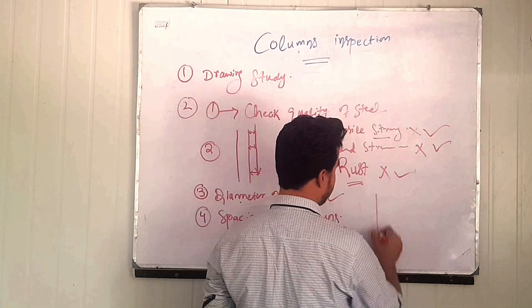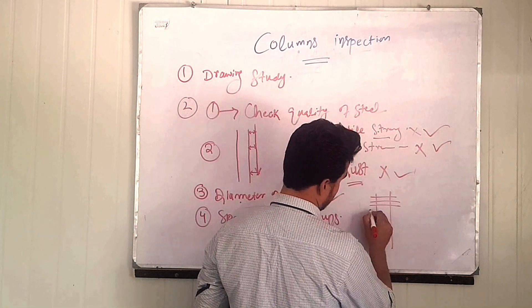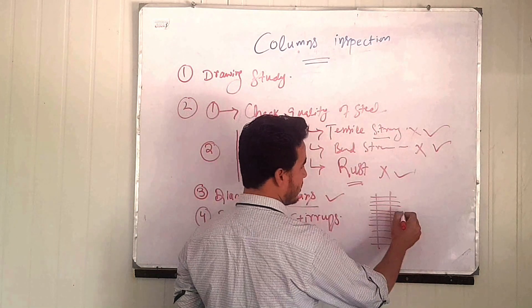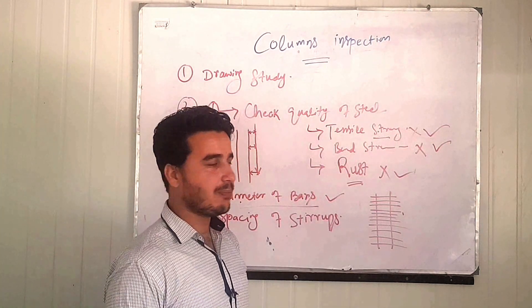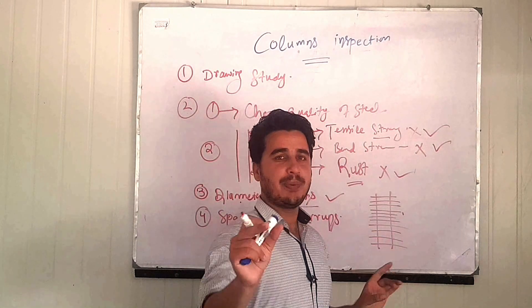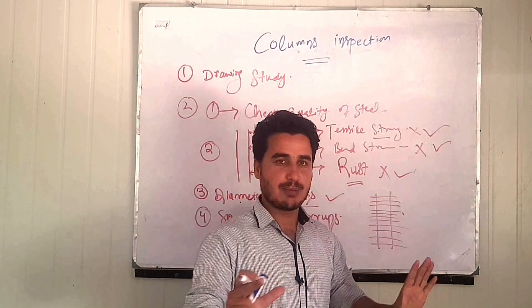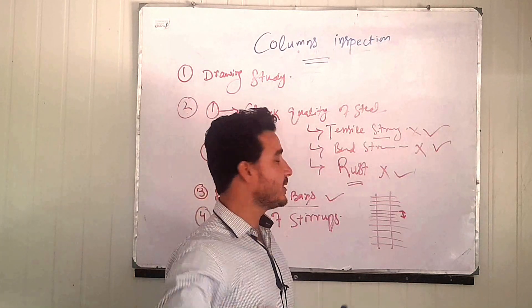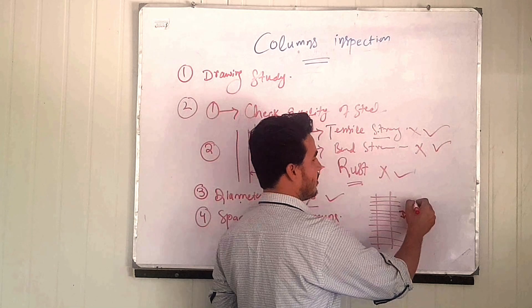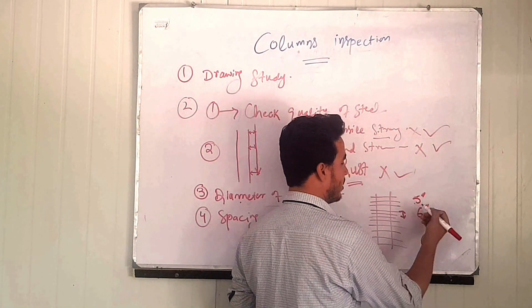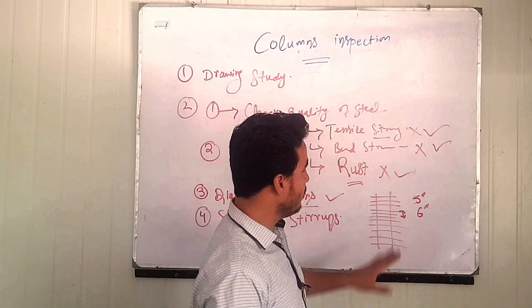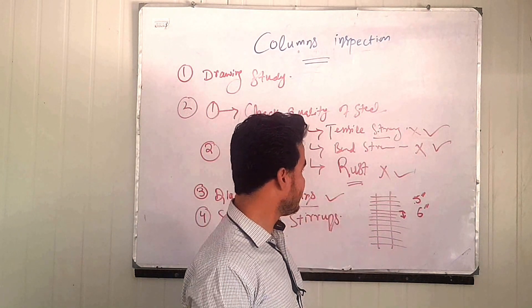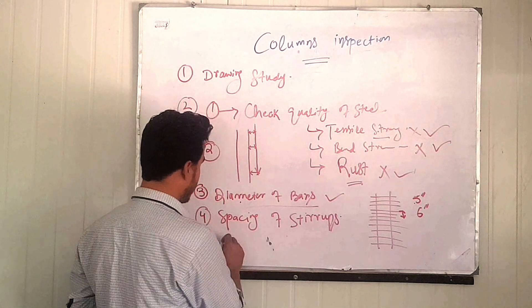The fifth point is the spacing of stirrups — that is, the distance between two adjacent stirrups. At the lapping zone (Zone B), the spacing shall be less than at the normal zone (Zone A). Check the spacing one by one between all stirrups in the column and confirm it matches the design specification, whether it is five inches, six inches, or whatever is given.